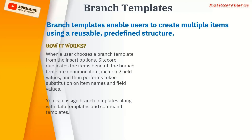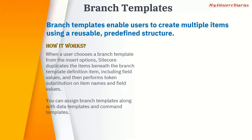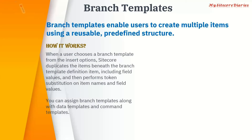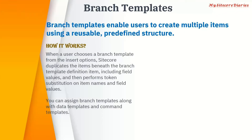When a user chooses a branch template from the insert option, Sitecore duplicates the item beneath the branch. Whatever items are below that branch template get duplicated. That template definition is then used, and if it has any tokens, it replaces those tokens — including field values — performing token substitution on both item name and field values.